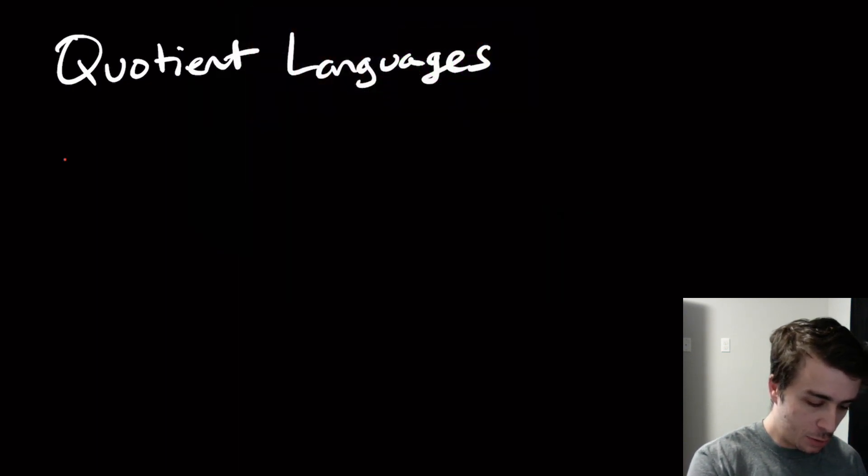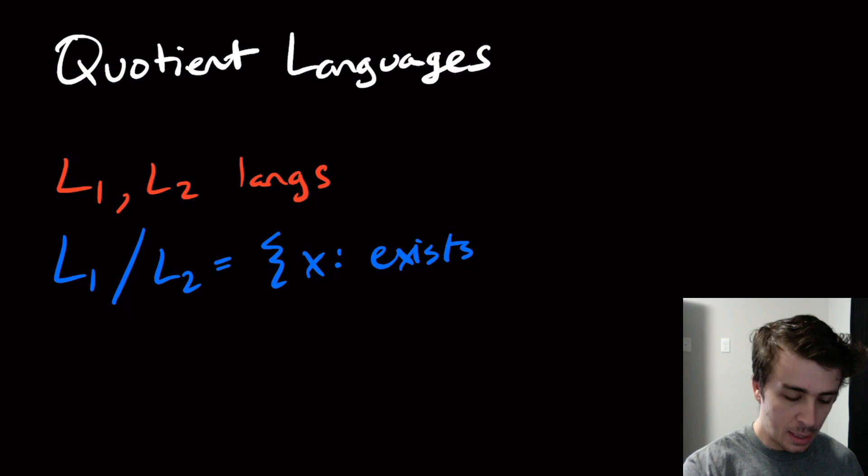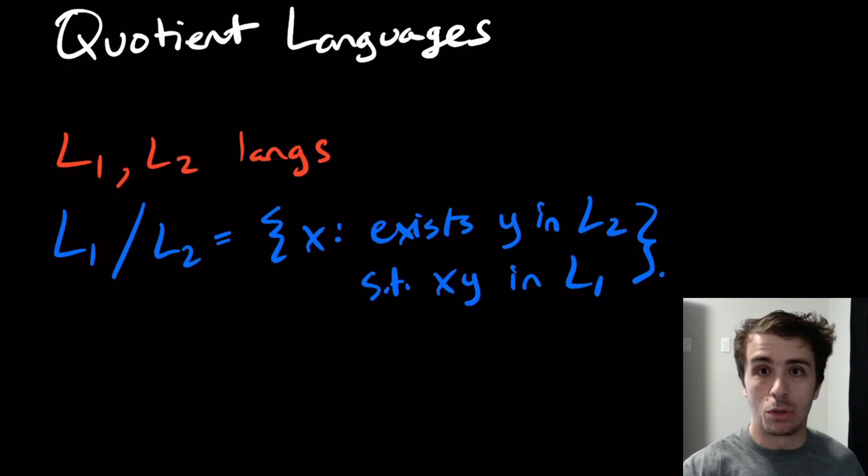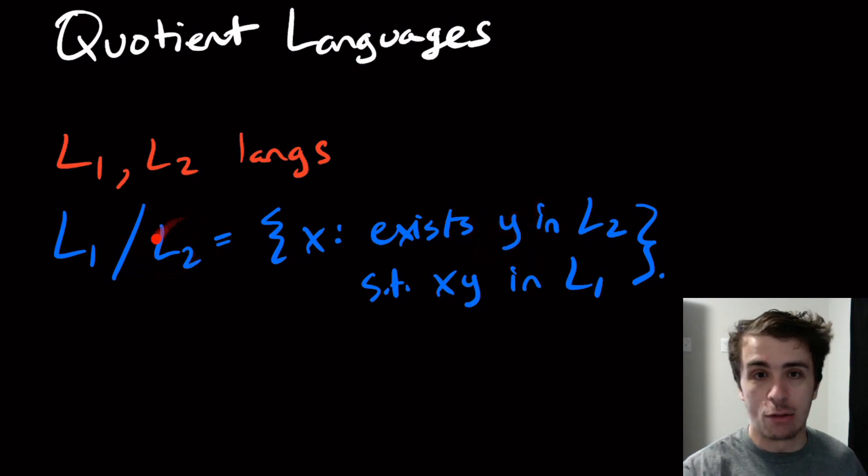Let's suppose that I have two languages L1 and L2. Then I'm going to define L1 divided by L2 to be all the strings of the form X such that there exists a Y in L2 such that XY is in L1. In some sense what we're doing is we're taking the string Y from the language we're dividing by and taking it away from those strings in L1.